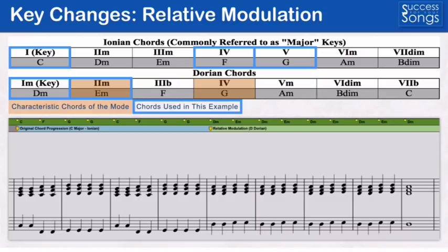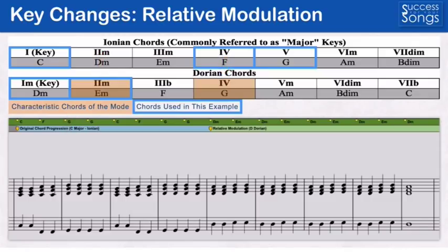You'll notice a couple things highlighted on these charts as well, and I put a little key here to outline what that means. The chords shown in orange are the characteristic chords of that mode. In the Dorian chart you can see that the two minor and the four chords are in orange because those are the characteristic chords in the Dorian mode. So basically if you're using the Dorian mode you want to try and use some of those characteristic chords so that you get the flavor of the Dorian mode. If you don't use the characteristic chords, or at least one of them, the chords could be shared by other keys and it won't necessarily feel like a Dorian key.